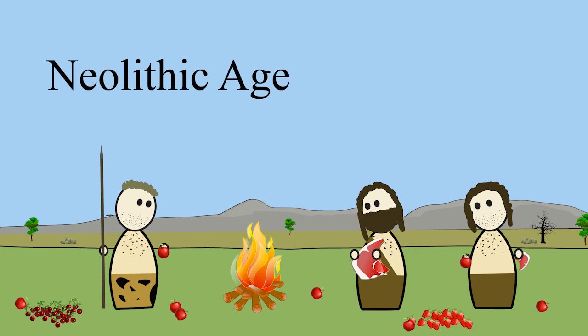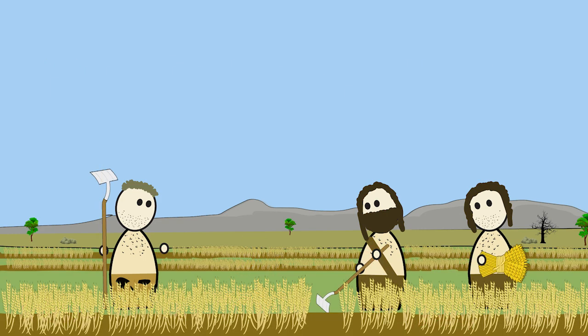Then, in the Neolithic Age, around 10,000 BC, humans began to farm, creating large groups of people living in non-nomadic settlements. As these settlements grew more crops and food, so did their population.